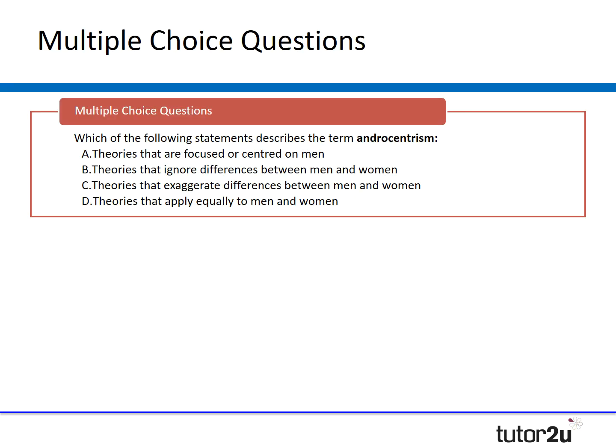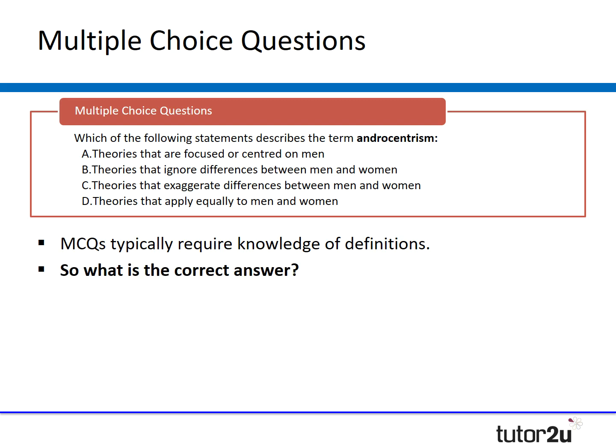Given that we've just looked at the definitions, the multiple choice question shouldn't pose too many problems. Most multiple choice questions tend to be centred on definitions. Therefore, if you've learned your definitions well, it should jump out at you immediately — for example, which of the following statements describes androcentrism. Hopefully most of you are thinking it's A, and that would be absolutely right. Hopefully multiple choice questions will be quite straightforward, but try not to spend too long on them.